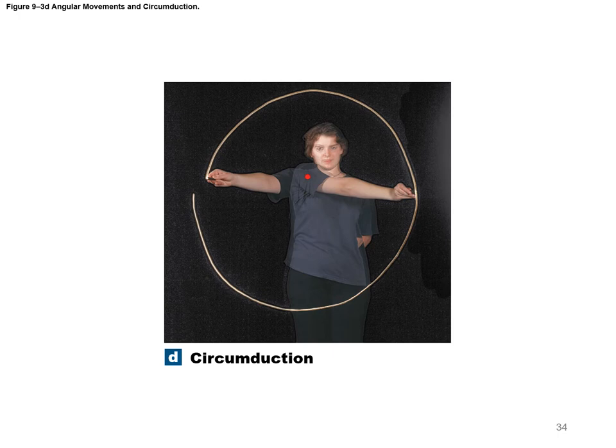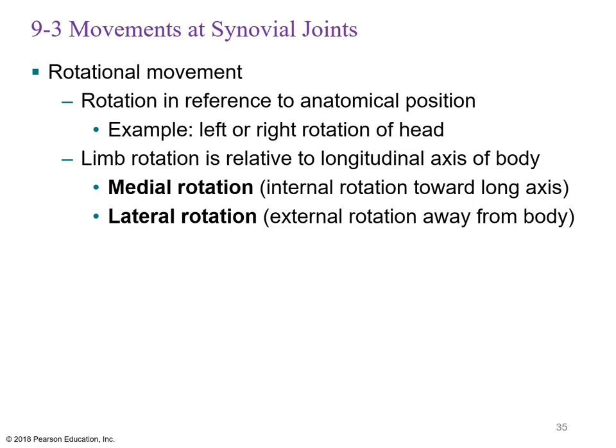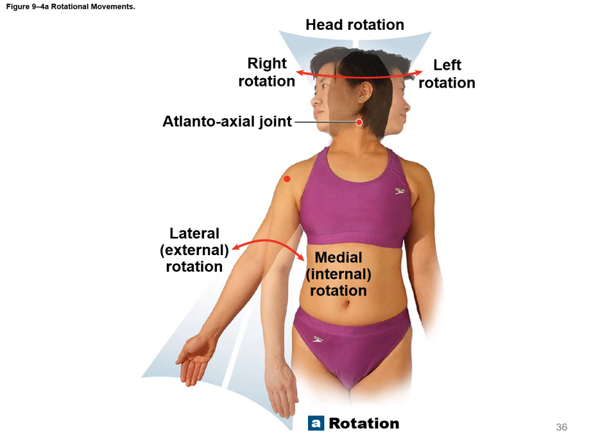Circumduction is a complete circular movement without rotation, combining flexion, extension, abduction, and adduction. Rotational movement is described relative to anatomical position: looking left is left rotation, looking right is right rotation. Limbs can medially and laterally rotate — for example, the shoulder and thigh can medially and externally rotate.